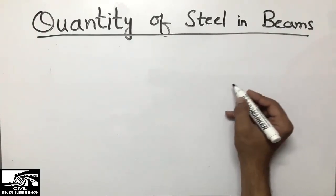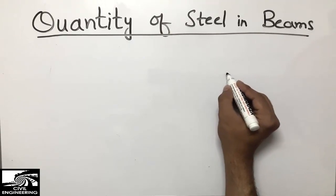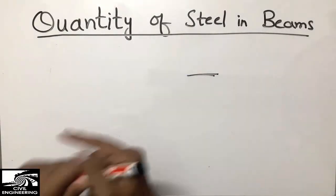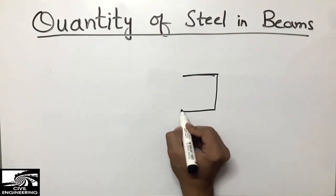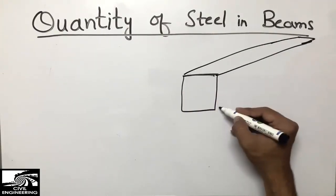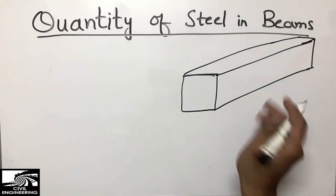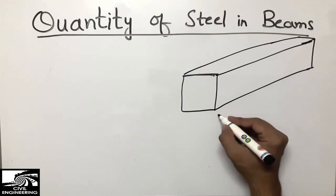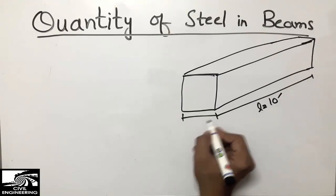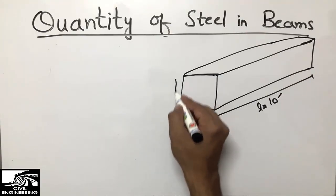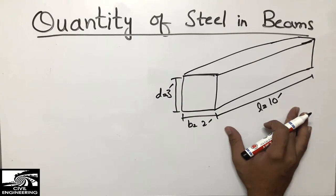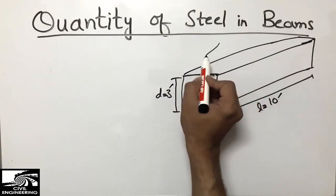To discuss the quantity of steel and concrete, we are taking an example of a beam. Let's consider a beam here in 3D. This is a 3D beam. Let's take an example — this beam has a length of 10 feet, a width of 2 feet, and a depth of 3 feet.